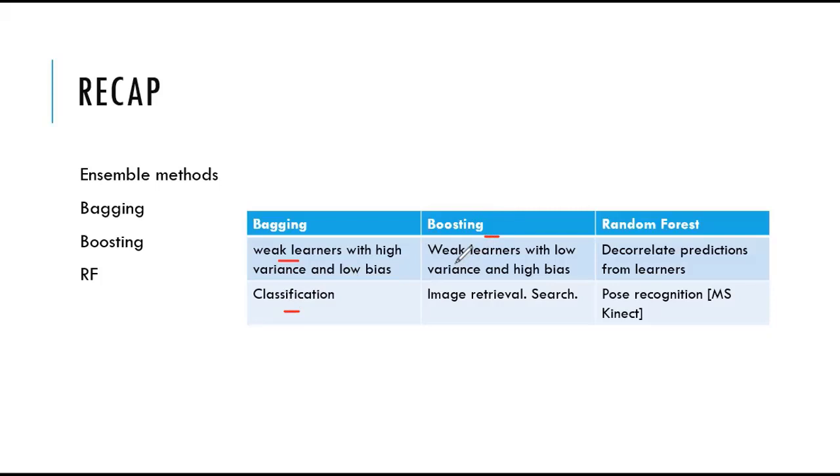Boosting, the idea is to train weak learners with low variance and high bias. It's a good choice for image retrieval and search applications.